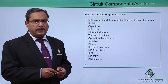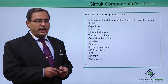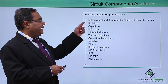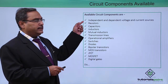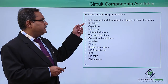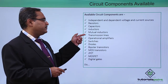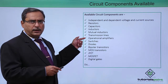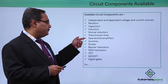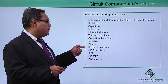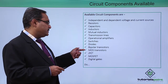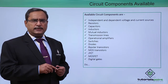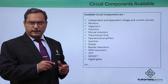Different types of components are available in PSPICE and those components will be used while constructing our circuits: independent and dependent voltage and current sources, resistors, capacitors, inductors, mutual inductors, transmission lines, operational amplifiers — we have shown you so many experiments with the operational amplifier in this tutorial — switches, diode, bipolar transistors, MOS transistors, JFET, MOSFET, digital gates, and so on. Different types of digital ICs are there which will have different kinds of circuits.